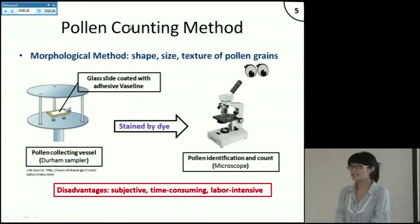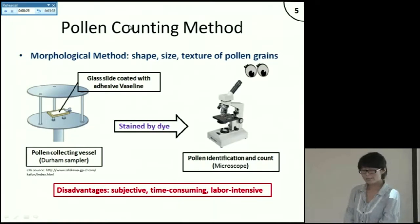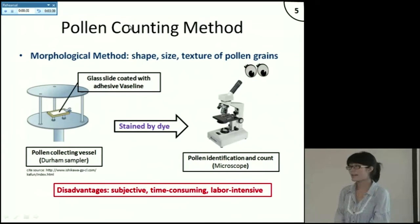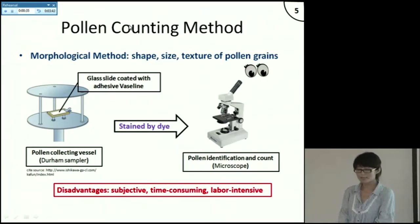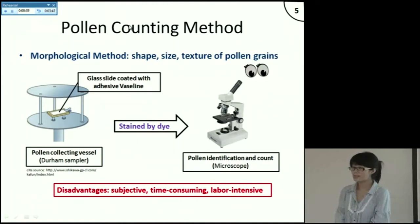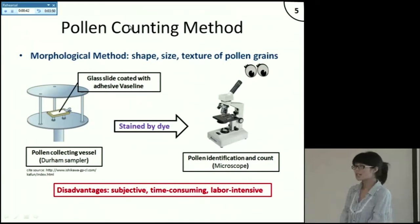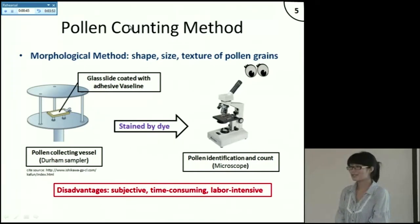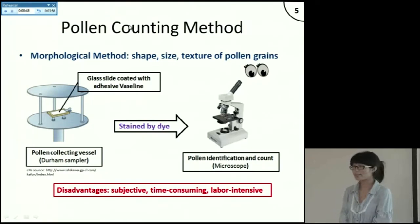Pollen samples are usually collected by a Durham sampler, on which a glass slide coated with adhesive vaseline is fixed. Microscopic examination is performed after staining the pollen grains with chemical dyes. This is the mainly used method, but the process strongly depends on the observer's subjective judgment, and the process is time-consuming and labor-intensive.